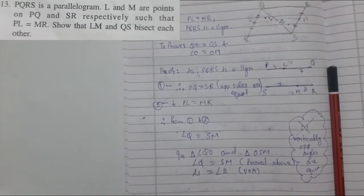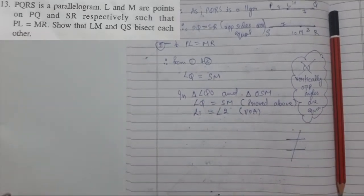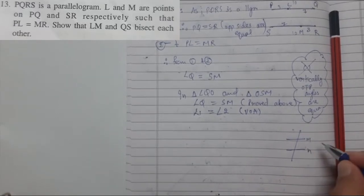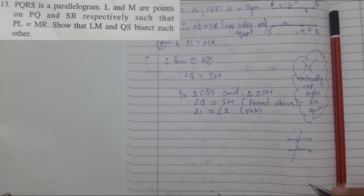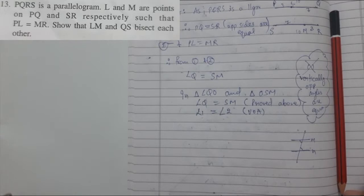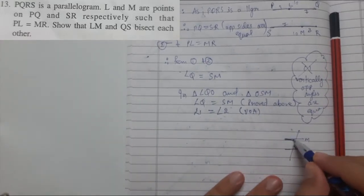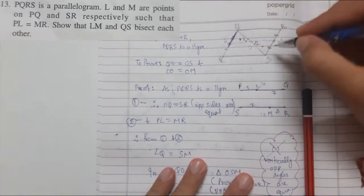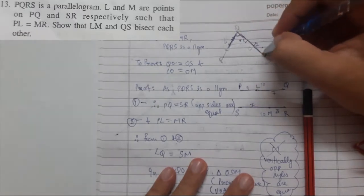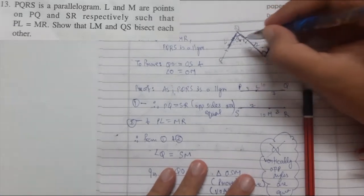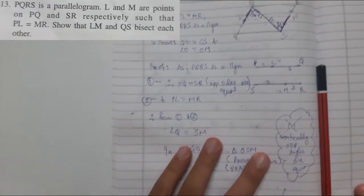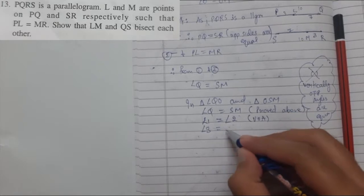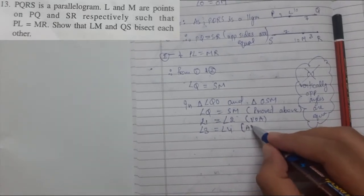We also discussed properties of parallel lines: alternate interior angle, corresponding angle, and co-interior angle properties. The most commonly used ones are alternate interior and corresponding angles. Alternate interior angles form a Z-shape. Since PQ and SR are parallel, angle 3 equals angle 4 by the alternate interior angles property.